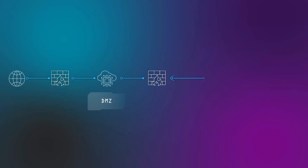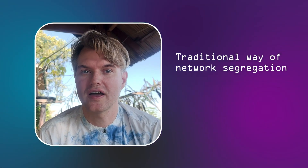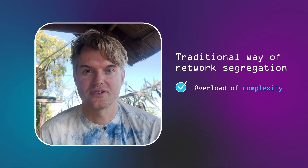Let's first look at the old way of segregating networks. Network segregation is often understood as dividing a network into different zones and putting firewalls in between all of those zones, then configuring whatever application access is necessary between them. Even smaller organizations quickly ramp up thousands of firewall rules, and larger organizations reach hundreds of thousands of rules across hundreds of different firewalls.